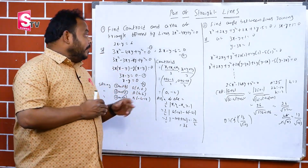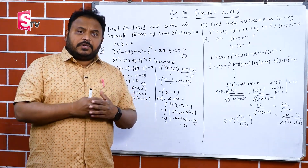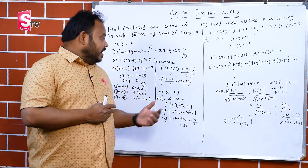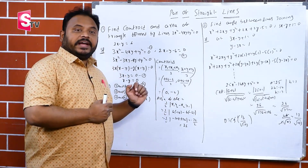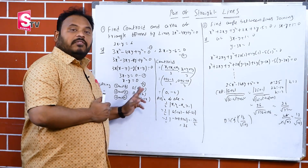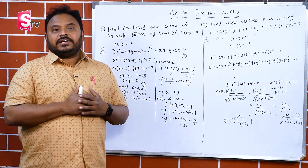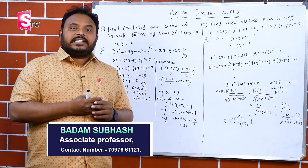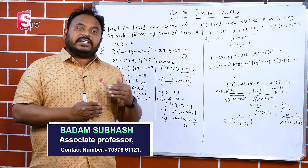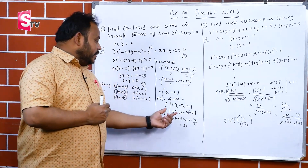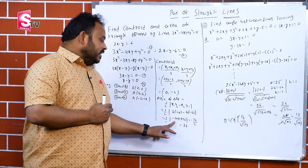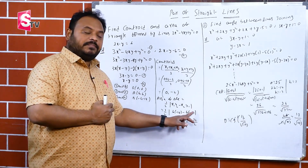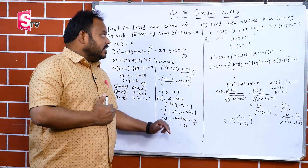Substituting the vertices into the centroid formula gives (0, −4). For the area, since one vertex is the origin, we use the simplified formula ½|x1·y2 − x2·y1|, giving −108+36 = −72, and taking the modulus and halving: area = 36 square units.